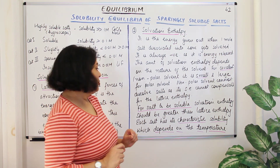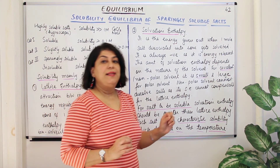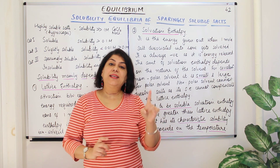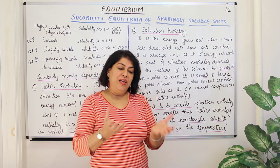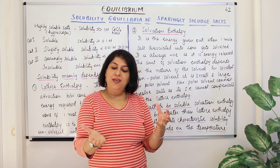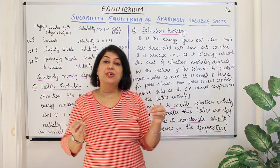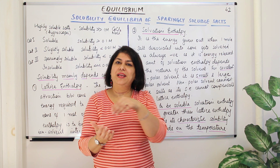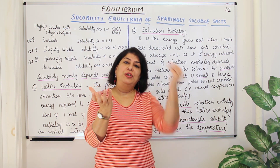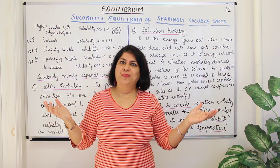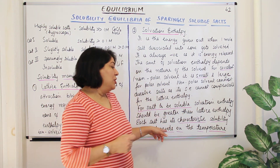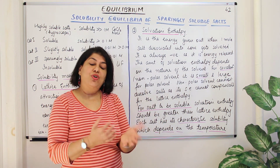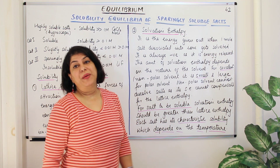So for salts to be soluble, solvation enthalpy should be greater than the lattice enthalpy, and each salt has its own characteristic solubility at a particular temperature. If you add sugar or salt to cold water it does not dissolve readily, but in boiling water it dissolves on its own — you don't even have to stir it. That is because the solubility also depends on the temperature of the solvent.